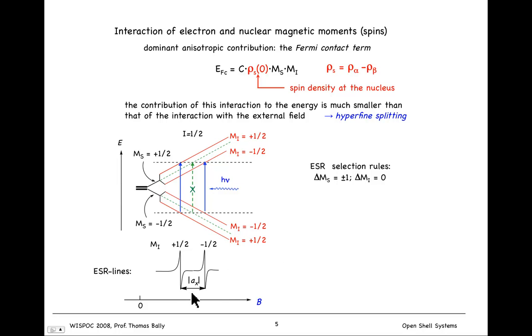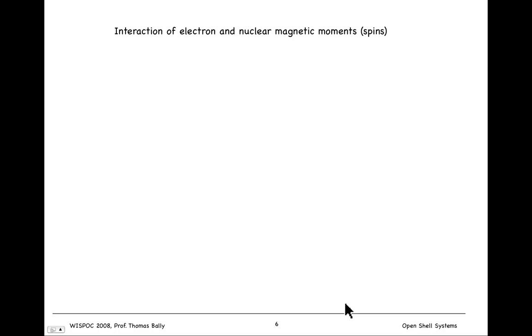The separation between those two defines the hyperfine coupling, A sub x, associated with nucleus x. And as we saw before, it depends on the spin density, and inside this constant are the details about the magnetic moments of the nucleus, the electron, and so on.